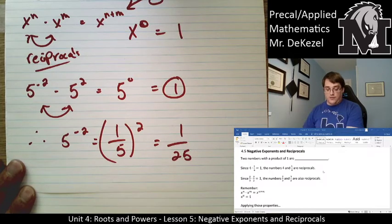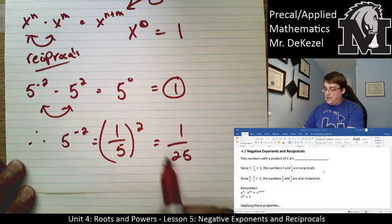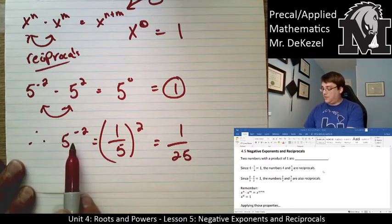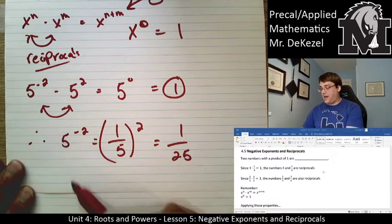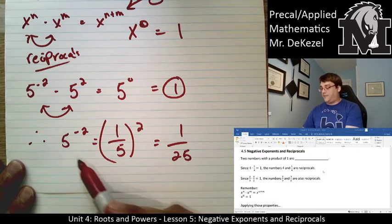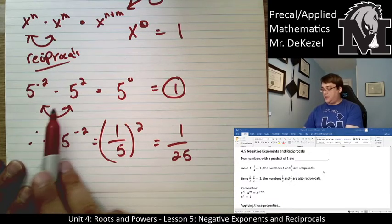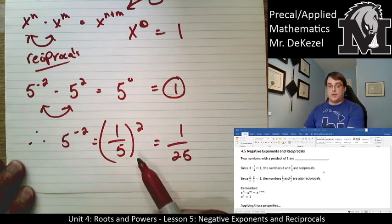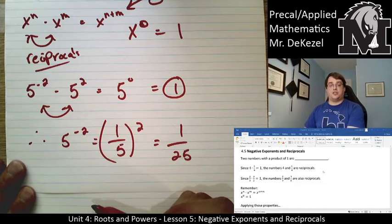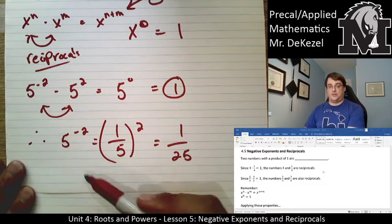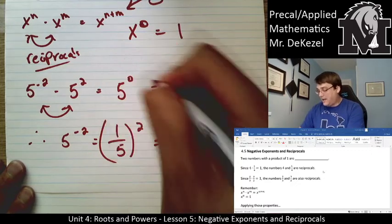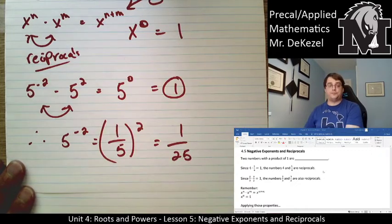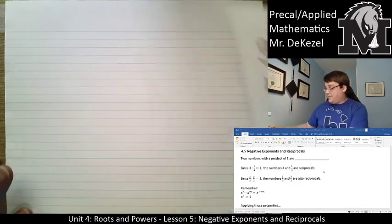Whenever we have a negative exponent, we are going to flip this value, because five to the negative two must be the fraction version of five so that it all adds to zero. Let's do some examples.